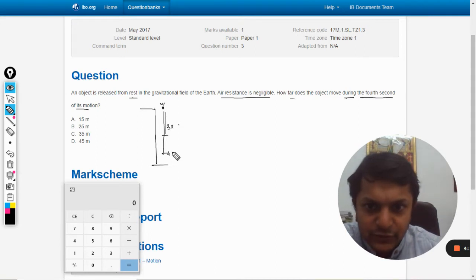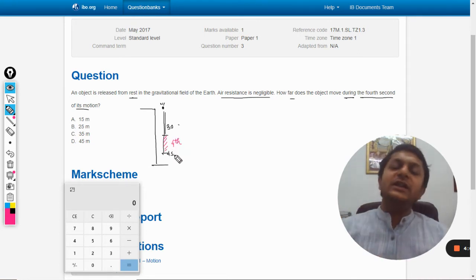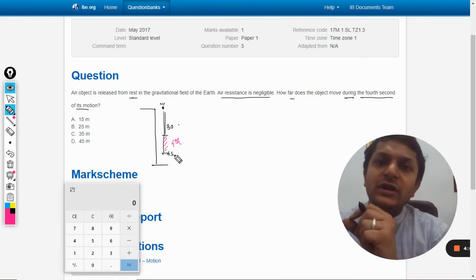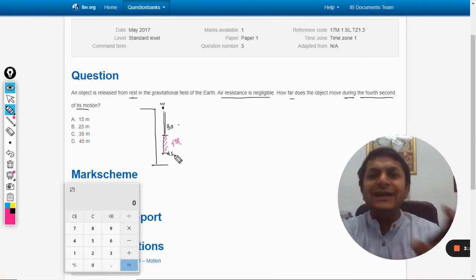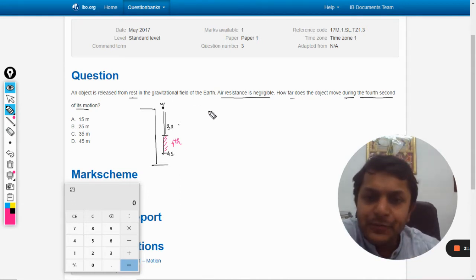And this is up to four seconds. The distance traveled in the fourth second is basically this one. What the question wants us to do is find the distance that was traveled only in the fourth second.